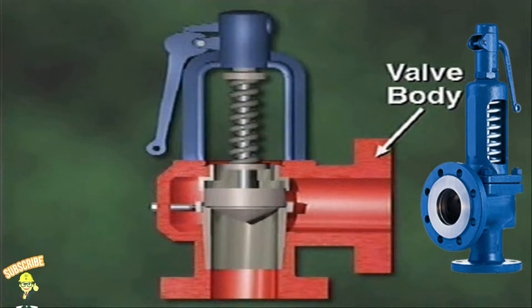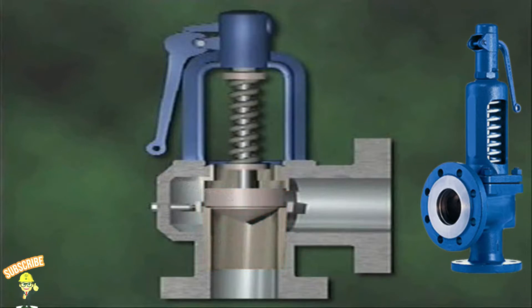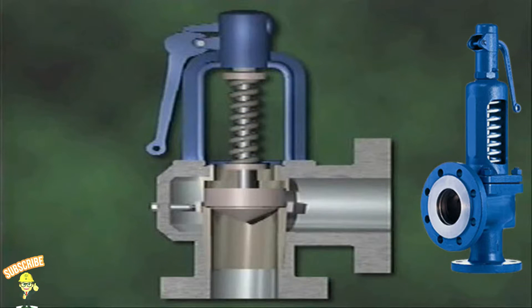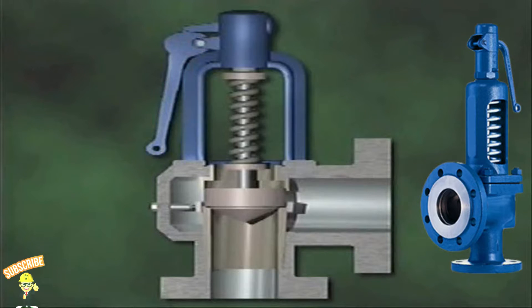The valve body directs the flow of pressurized fluid. The disc and seat seal the system closed under normal pressure. The disc is mounted on a stem. A spring holds the disc in place and the valve stem transfers tension from the spring to the disc. The release lever is used to trigger the valve manually while the system is operating to make sure that the valve works properly.